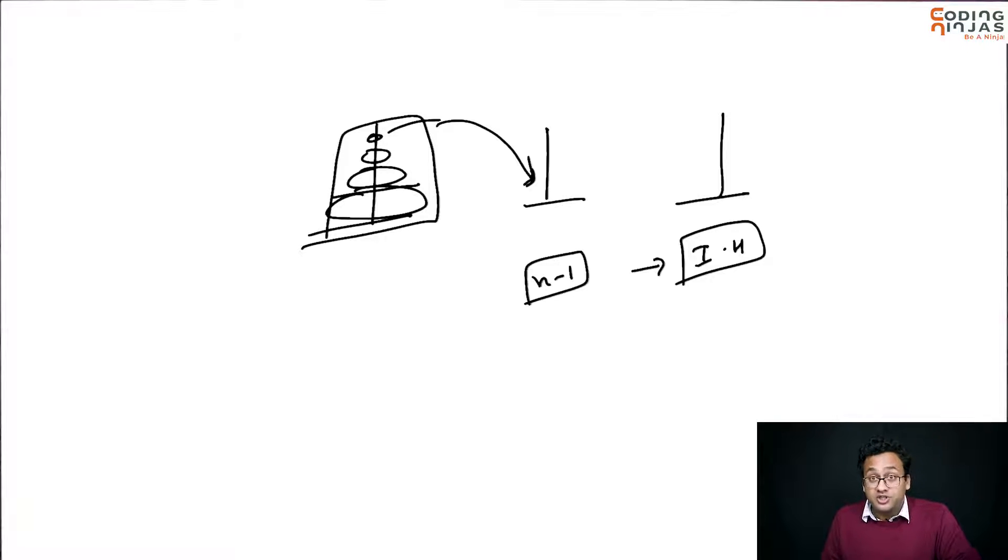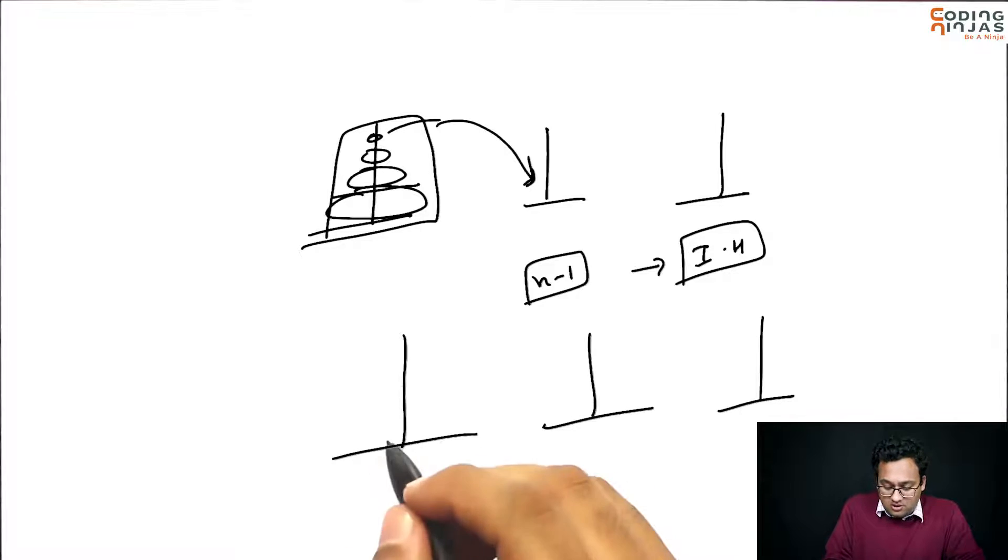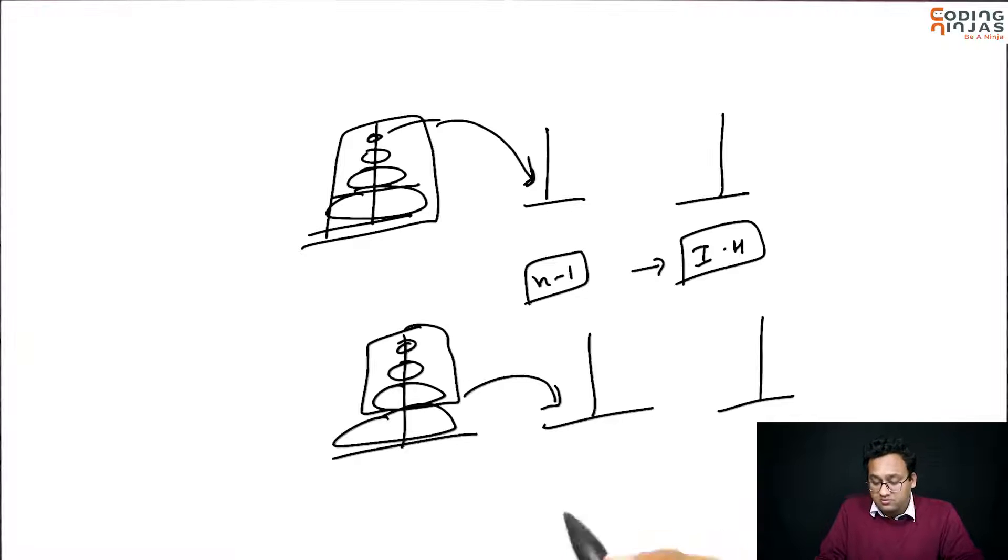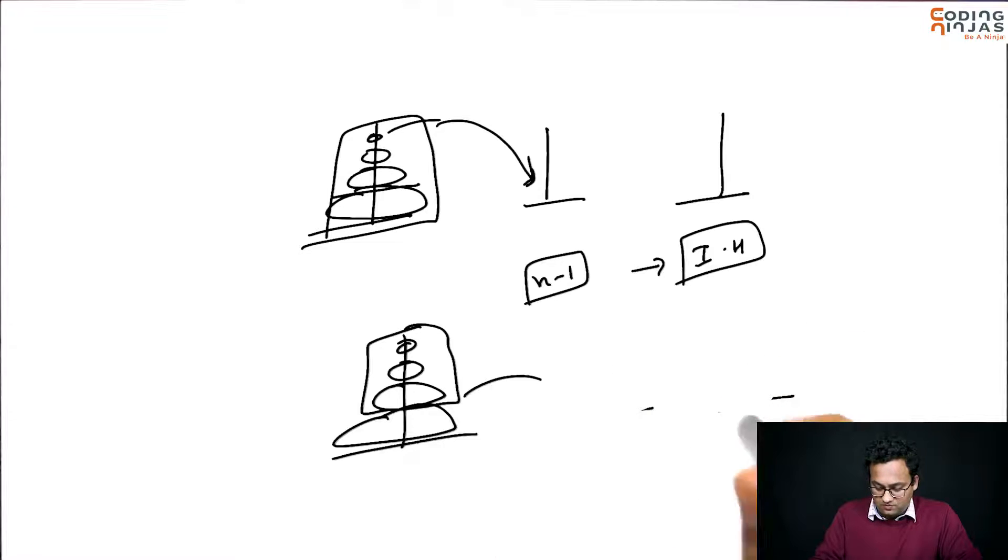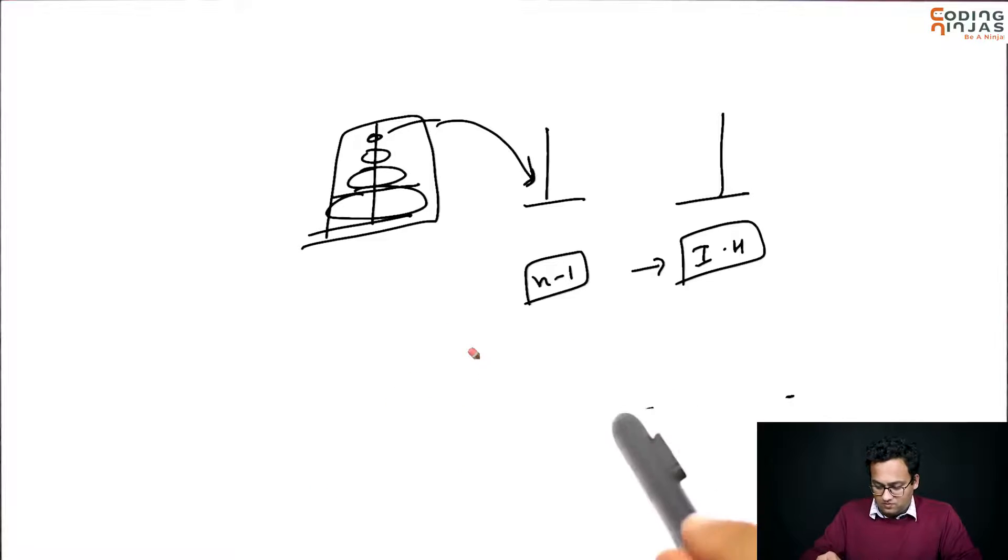So, one solution that some people give is basically this. If you can do n minus 1, why don't you move these n minus 1 here?